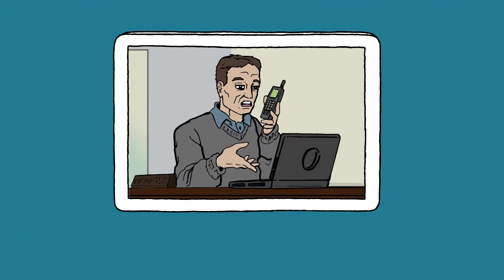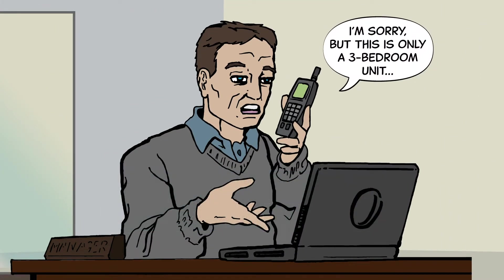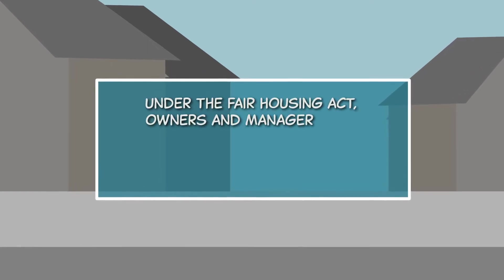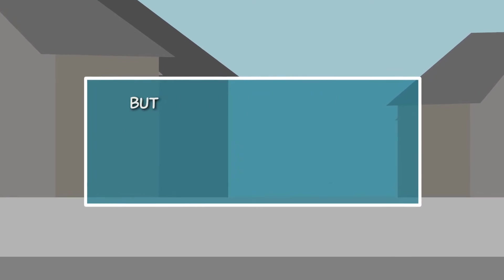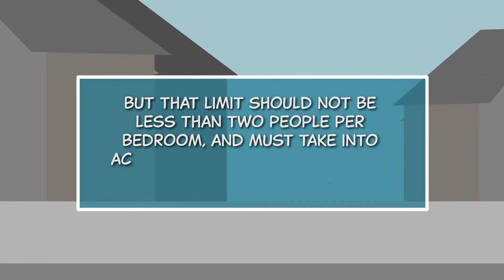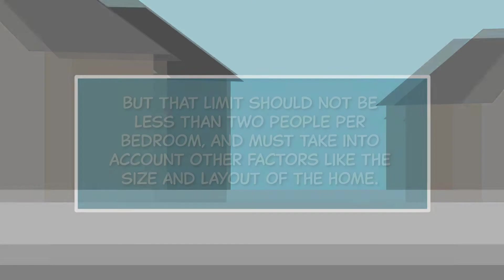Placing unreasonable restrictions on the number of people who can reside in a rental unit. [Landlord]: I'm sorry, but this is only a three-bedroom unit. There really isn't enough space for four kids. Under the Fair Housing Act, owners and managers can develop reasonable limits on the number of people who can live in a rental unit, but that limit should not be less than two people per bedroom and must take into account other factors like the size and layout of the home.